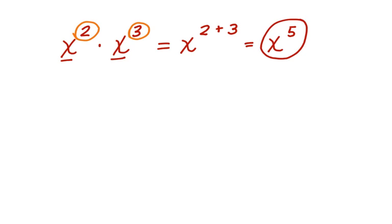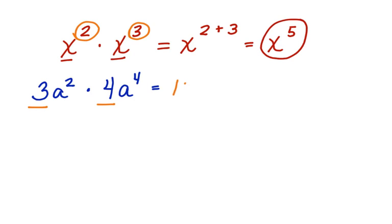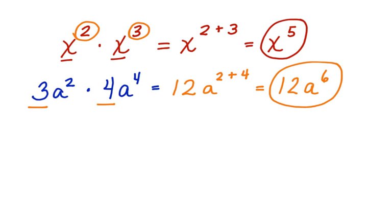This is my final answer. Let's look at another one. Let's say I have 3a squared times 4a to the fourth. I'm going to work with this one a little differently. First, I'm going to multiply the coefficients: 3 times 4, which gives me 12. Then I have a squared plus the fourth, which equals 12a to the sixth. This is my answer.